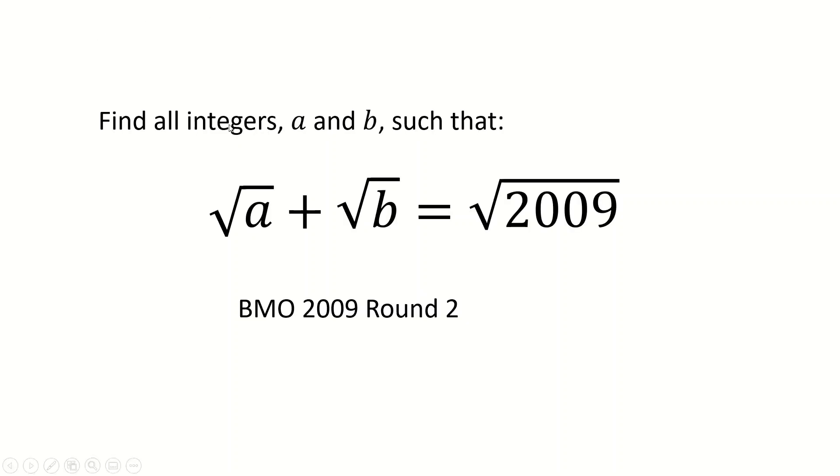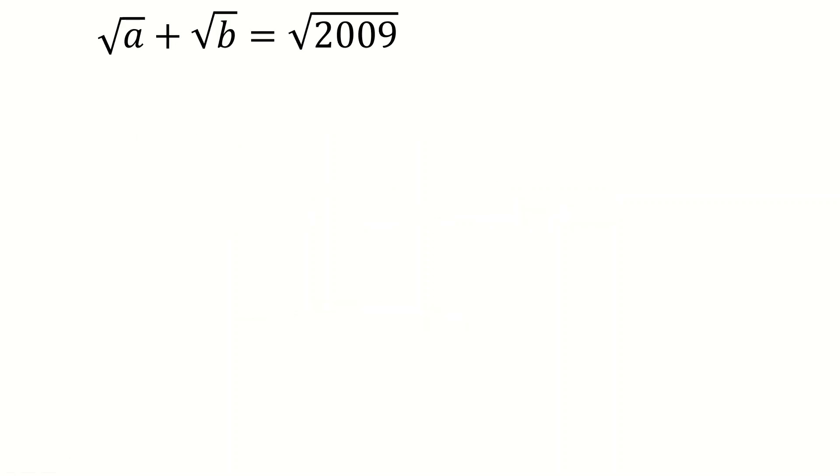Now the first thing, this is a number theory problem right? You know it's a number theory problem because it's talking about integers and that's what number theory is. And whenever we're thinking of number theory we're thinking of prime factorizations. Given this is a number theory problem the obvious thing to do is to consider root 2009 and see whether or not you can simplify that.